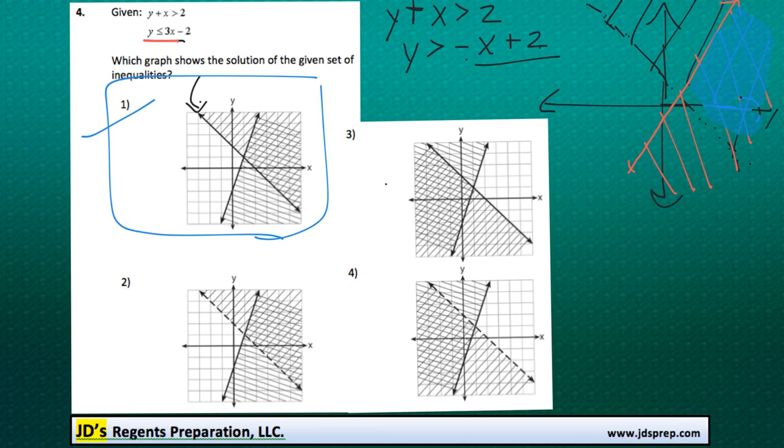And taking a look at our possible answers, it looks like the one that matches this is option number 2. And be careful, you might think it's option number 1, but again, this should be a dotted line like I pointed out earlier. All right, and that's all for this video. Thanks for visiting JD's Regents Preparation.